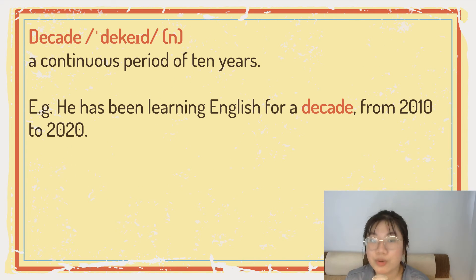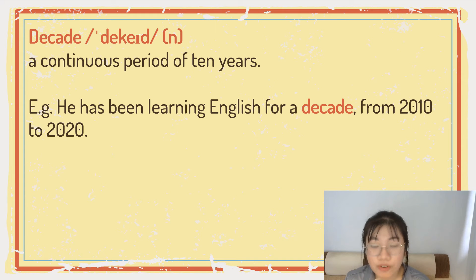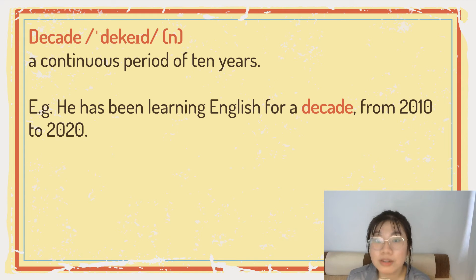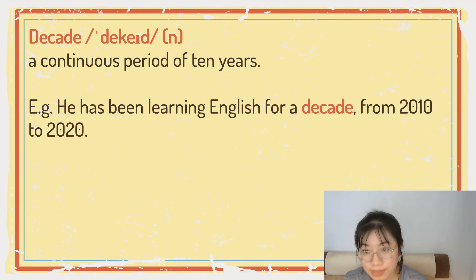So, 'decade' is a continuous period of 10 years. For example: he has been learning English for a decade, from 2010 to 2020.